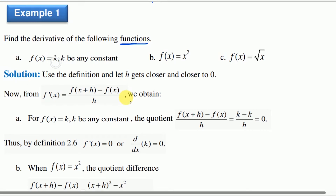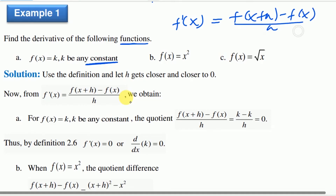Let k be any constant number. The derivative of f of x equals f of x plus h minus f of x, divided by h, as h approaches zero. So f of x plus h equals k, and f of x equals k, so k minus k equals zero, divided by h. Zero divided by h equals zero. So the derivative of f of x equals k is zero at any point.